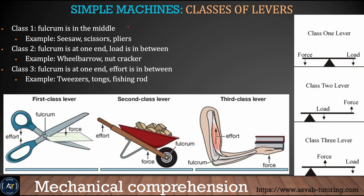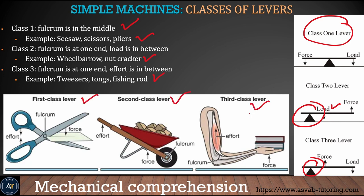The first class lever has the fulcrum in the middle. The second class lever has the fulcrum at one end with the load in between. The third class lever has the fulcrum at one end and the effort in between. Make sure you write down these examples along with the pictures of first, second, and third class levers — this is a very important concept for your test.